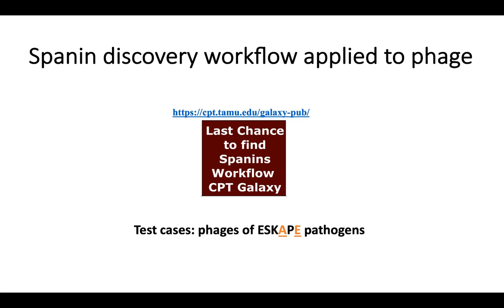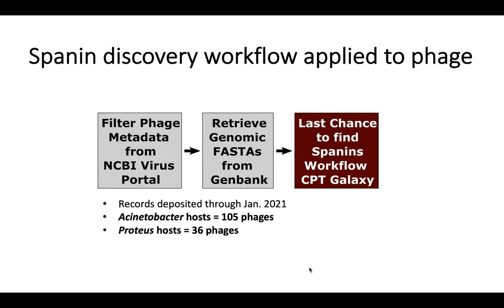We applied this particular workflow to a subset of phages for validation, and we chose to use a couple of different groups of phages that infect medically relevant escape pathogens of humans. In particular, we looked at the phages of Acinetobacter and Proteus, which falls under the Enterobacteraceae. We found in the NCBI virus public database records deposited through January: 105 phages for Acinetobacter and 36 phages for Proteus. We got their genomic FASTA files and then applied our workflow to them.